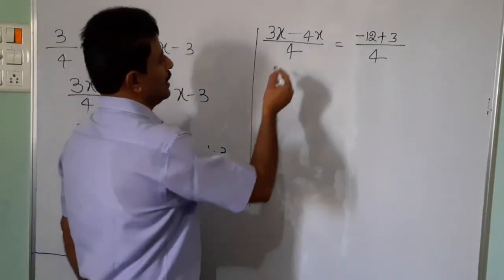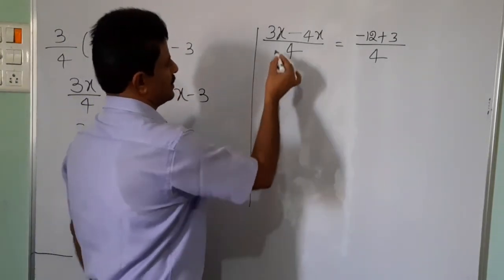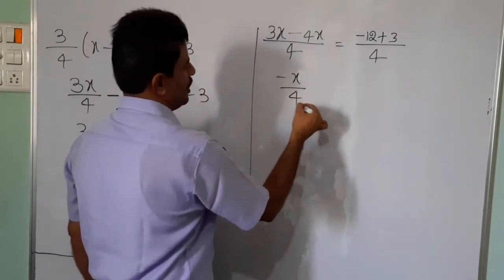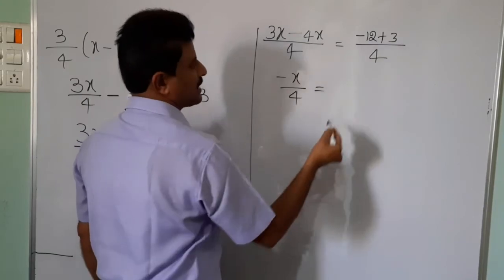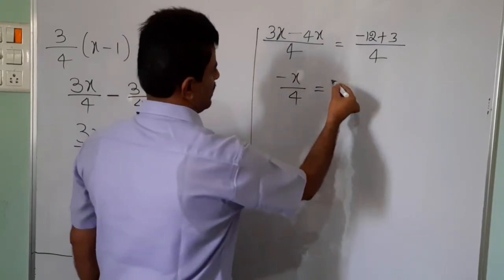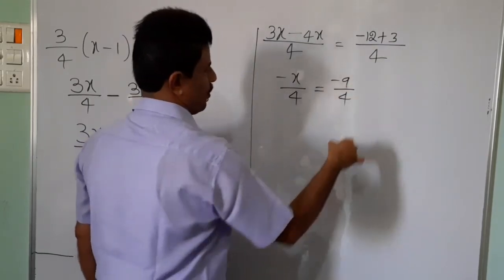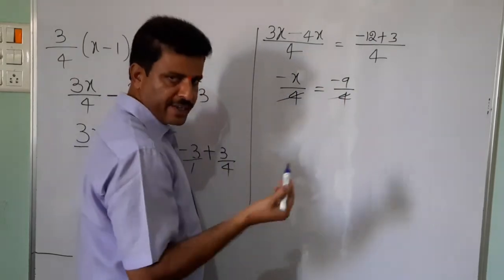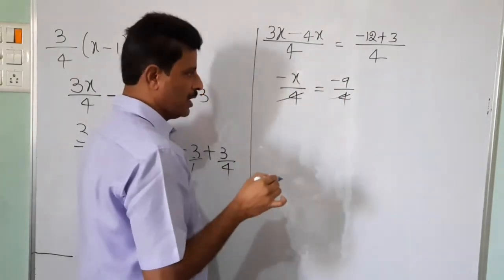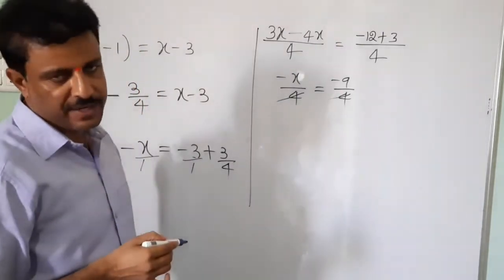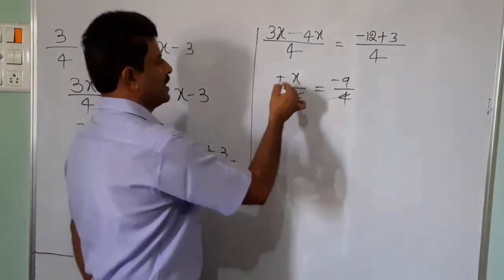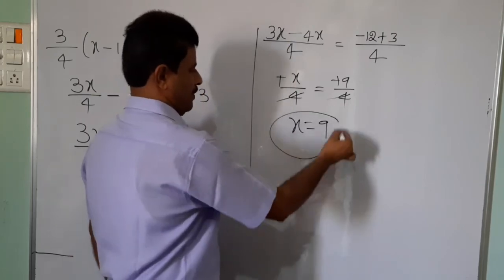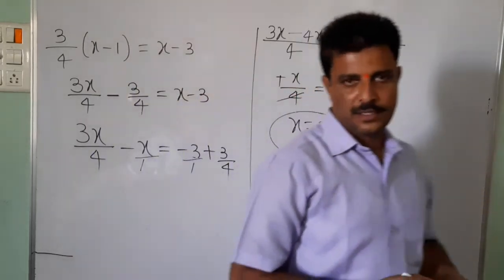After cross multiplication: 3x minus 4x gives minus x, so minus x by 4 equals minus 9 by 4. Since both sides have denominator 4 — the denominators are equal — they cancel. So minus x equals minus 9. Therefore x equals 9. This is the result.